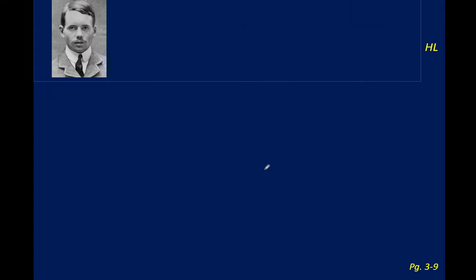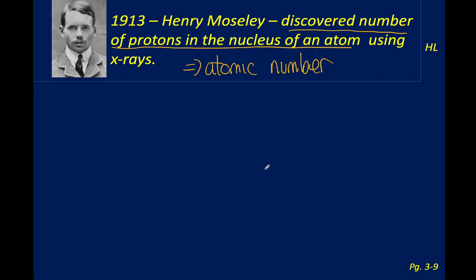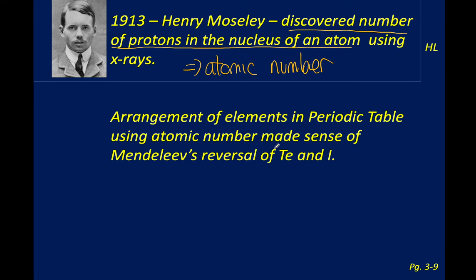The last person before we get to the modern periodic table is Henry Moseley, who discovered the number of protons in the nucleus using X-rays. Because of him, we now have what is called atomic number. Looking at tellurium and iodine in terms of atomic number, tellurium is number 52 and iodine is 53. Since our modern periodic table is based on atomic number, this arrangement makes total sense.